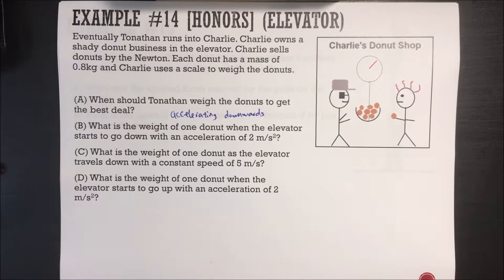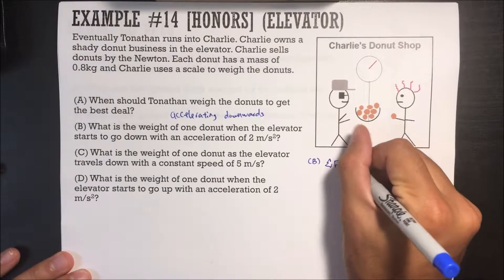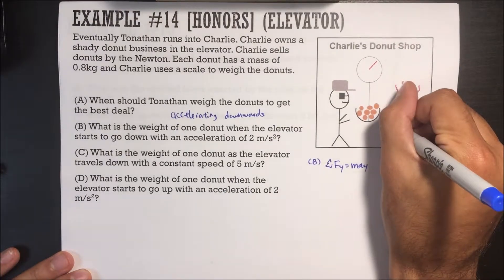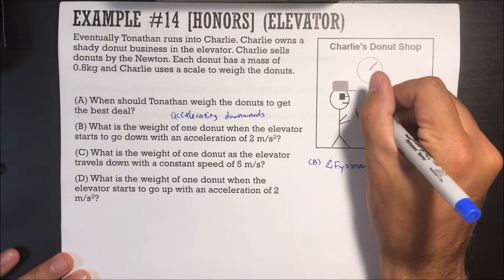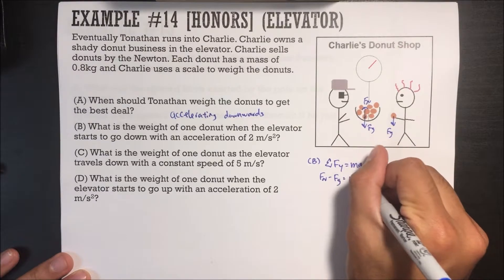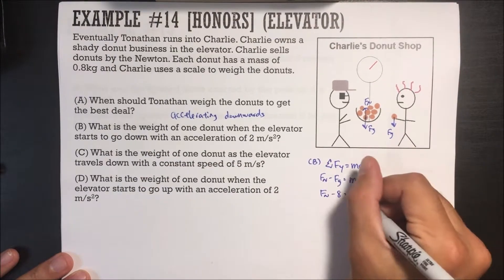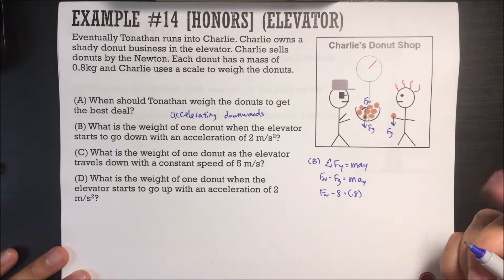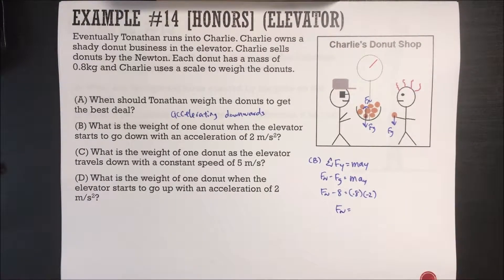What is the weight of one donut when the elevator starts to go down with an acceleration of 2 meters per second squared? Sum of all forces in Y equals mass times acceleration in Y. Force normal minus force of gravity equals mass of donut times acceleration. Force of gravity is 0.8 times 10, which is 8 newtons. Mass is 0.8, acceleration is negative 2 m/s². So the normal force — what the scale reads — is 6.4 newtons.